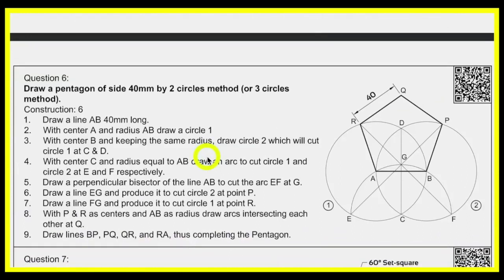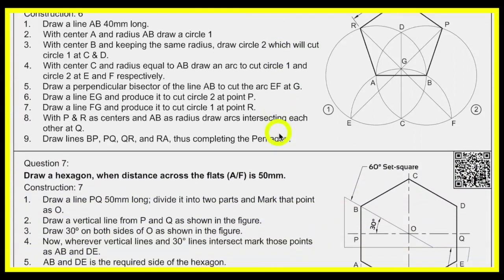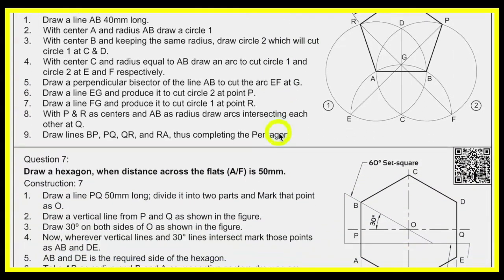It is advisable to also study other pentagon methods — the two-circle method and the 54-degree method. In the 54-degree method, point G is an important point, so you should pay attention to that.